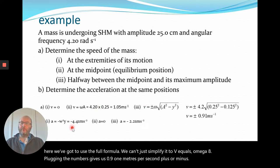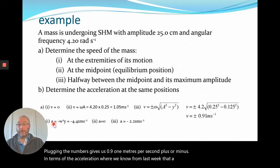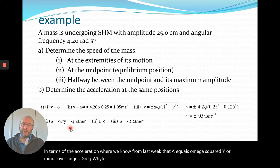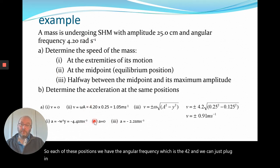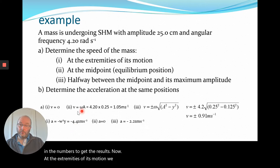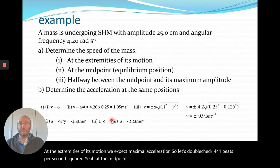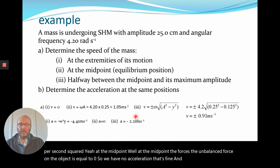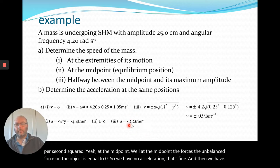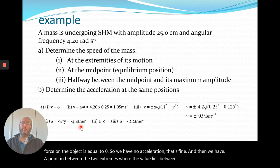In terms of the acceleration, we know from last week that a = -ω²y. At each of these positions, the angular frequency is 4.2, and we plug in the numbers. At the extremities, maximum acceleration is 4.41 metres per second squared. At the midpoint, the unbalanced force is zero so acceleration is zero. At the point in between, the value lies between zero and 4.41 metres per second squared.